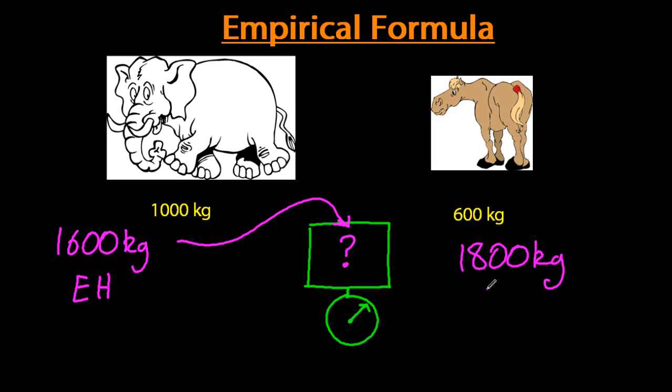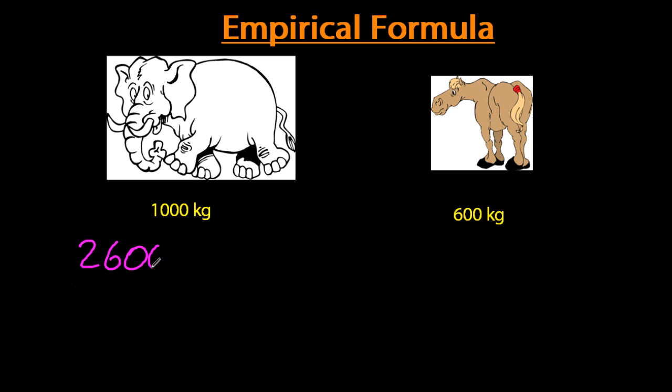1,800 kilograms, well that's three horses. Again, no extra data is needed. 2,600 kilograms, you've got a couple of elephants and a horse.